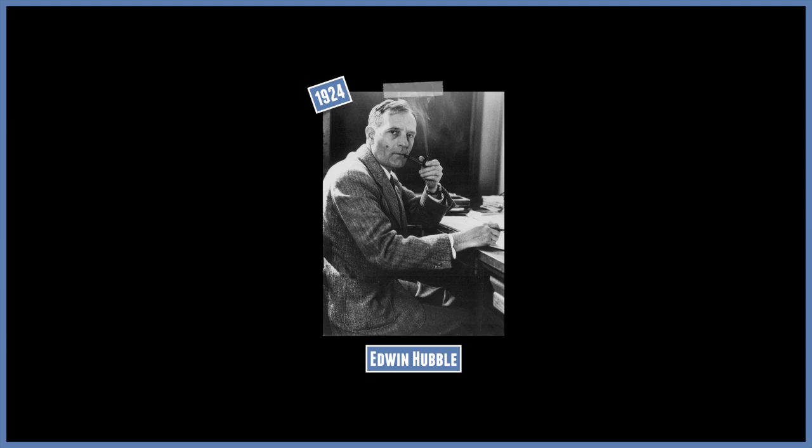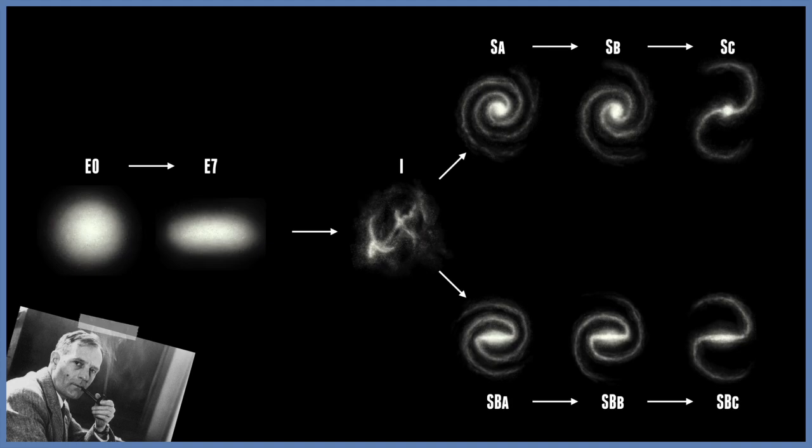It all started in 1924 when astronomer Edwin Hubble proved that galaxies are very distant objects that each contain millions or billions of stars bound together by gravity. Within a few years he set up a system to classify these galaxies, and we still pretty much use the same classification to this day, with some modifications and additions.